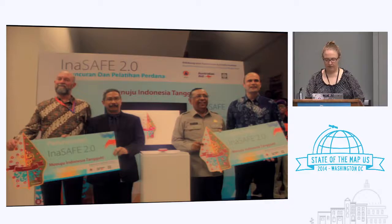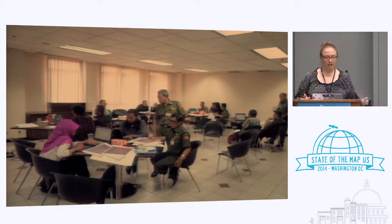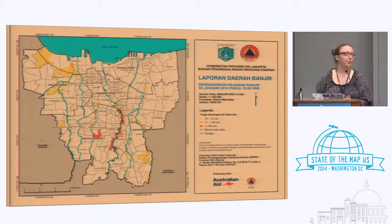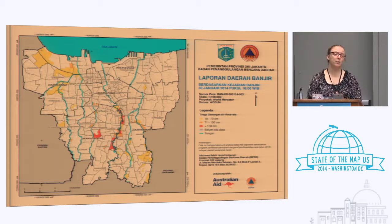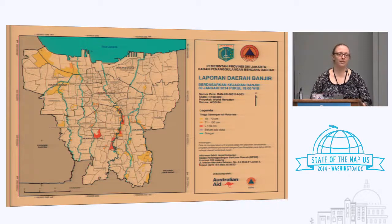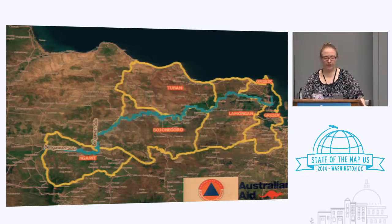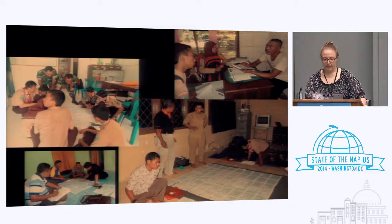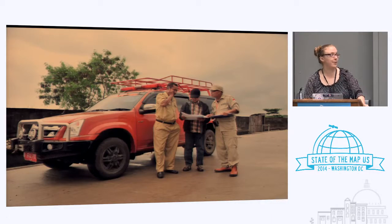And a lot of technical support. Here we are supporting the Jakarta government. This is an official flood map from the floods this year in January and February. HOT had someone on site helping do the GIS analysis. The hope next is to train the government how to do it. We also have a lot of field papers and go out surveying with disaster managers.